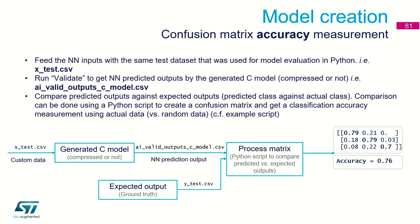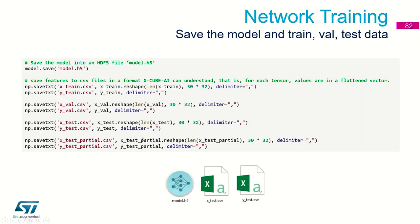How is this done with X-CUBE-AI? For the confusion matrix evaluation process, we have custom data in a CSV file. We fit the generated C model with those custom data, then compare with the expected output — the ground truth. A dedicated Python script processes and evaluates the confusion matrix. Using Python code, we can generate all datasets — both input and output — in CSV format.